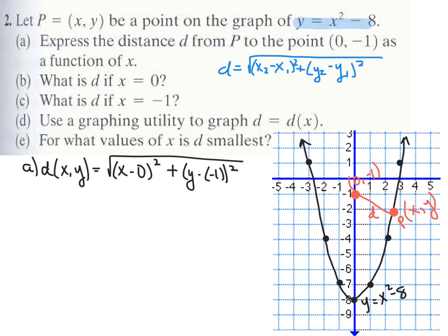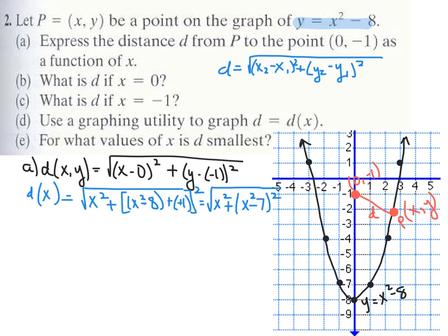Every point on this parabola satisfies y equals x squared minus 8. That means point P's y-coordinate is its x-coordinate squared minus 8, so we can replace y with x squared minus 8. Substituting gives the distance d(x) equals the square root of x squared plus (x squared minus 8 minus negative 1) squared, which simplifies to the square root of x squared plus (x squared minus 7) quantity squared.